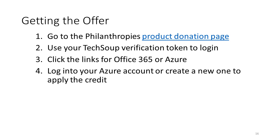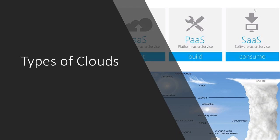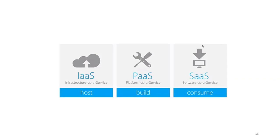Let's continue and talk about what Azure actually is. We're going to discuss the kinds of clouds: infrastructure as a service, platform as a service, and software as a service. It's important to understand the differences in order to understand the appropriate path for your organization, because some approaches cost more or are difficult to manage.